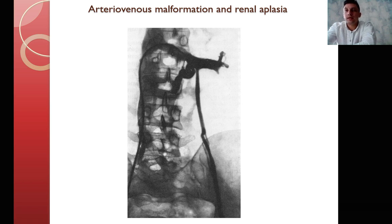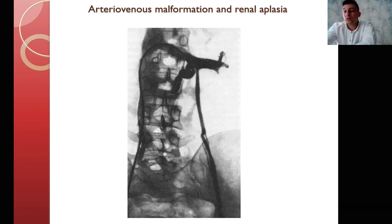Renal arteriovenous malformation (AVM) is a relatively rare malformation accounting for up to 1% of all AVMs. A distinction is made between congenital and acquired — traumatic and non-traumatic — renal AVMs, which can cause massive hematuria, pain, retroperitoneal hemorrhage, and heart failure. Non-invasive modalities such as ultrasound, multispiral CT scan, or MRI are widely used to diagnose this pathology, but angiography remains the gold standard. The advantage of angiography is the possibility of simultaneous treatment. Treatment may include endovascular occlusion of the arteriovenous fistula or open surgical intervention, including ex vivo techniques, with the choice based on patient condition and AVM characteristics.